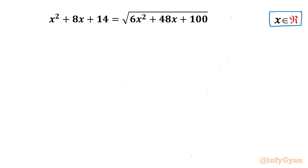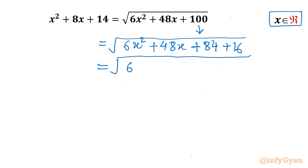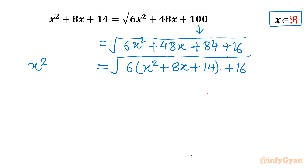I will split 100 as 84 plus 16. So the RHS becomes √(6x² + 48x + 84 + 16). The reason is I will take 6 common from the first three terms, which gives x² + 8x + 14 once again. And the left hand side is the same: x² + 8x + 14.